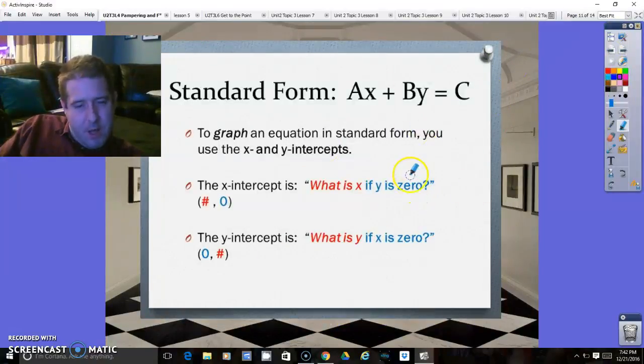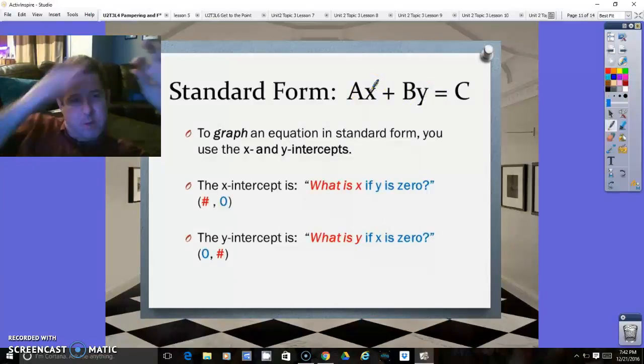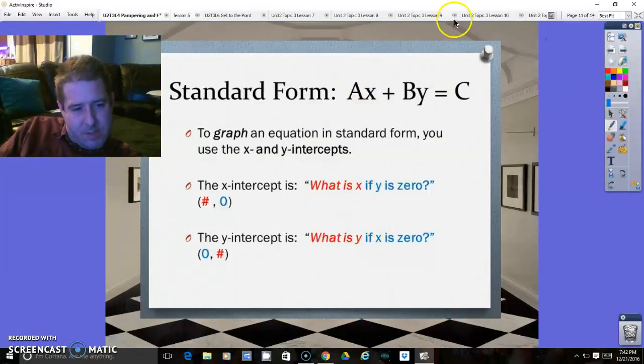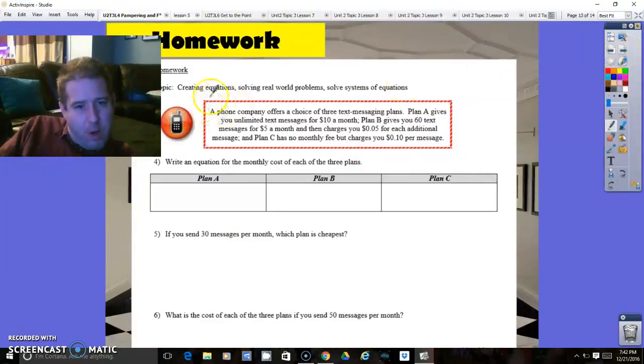There's another way of graphing when you have standard form, and that is by finding the two intercepts. Put zero in for x and solve for y, and put zero in for y and solve for x, and that'll give you your two intercepts. And once you have two intercepts, you can simply connect those two intercepts, and you've got your line as well. So I want to get to the homework.